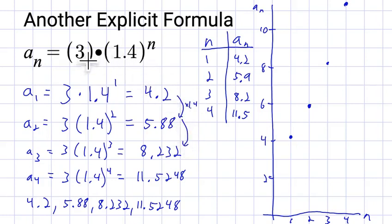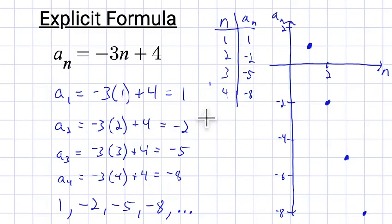So we kept multiplying by 1.4. Because it was just 3 times 1.4 to the next power. So we just multiplied by another 1.4. Notice that each time we were adding negative 3 or subtracting 3. So we had a constant rate of change here. And we notice in that situation, these points did make a straight line.